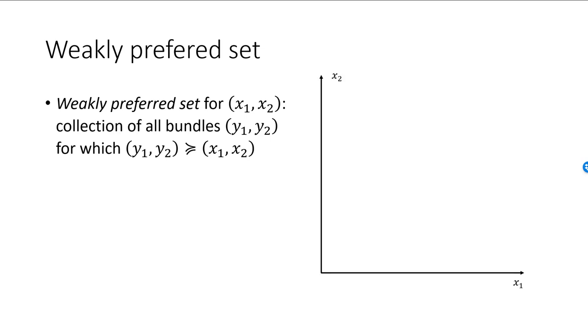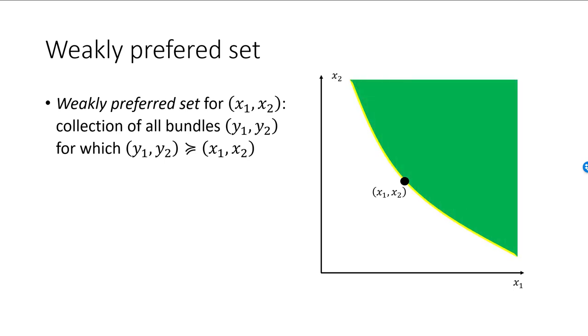Here is a picture. Here is our starting bundle. We have a bunch of bundles which are on the indifference curve for (x₁, x₂), bundles painted yellow. We also have a bunch of bundles which are strictly preferred to the X bundle painted green. All these bundles are weakly preferred to (x₁, x₂), and they constitute the weakly preferred set to our bundle (x₁, x₂). Note that the indifference curve for the X bundle is always included in the weakly preferred set for the bundle.